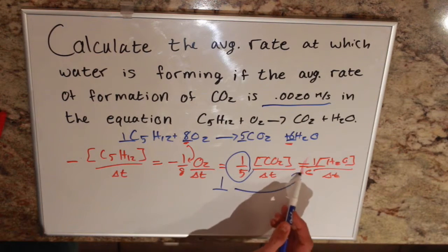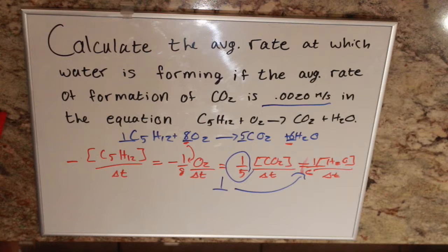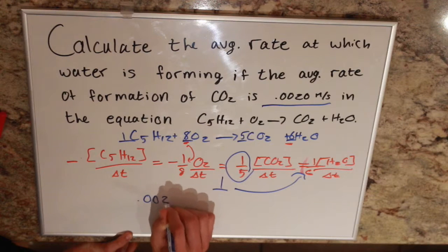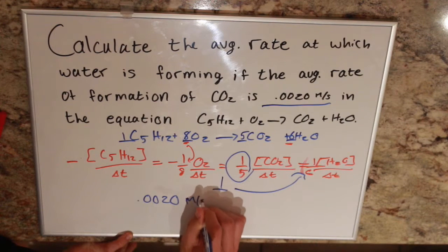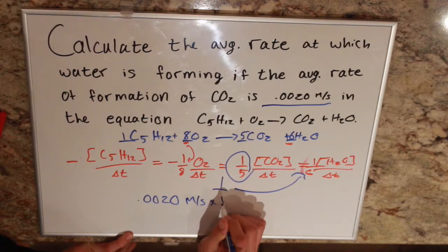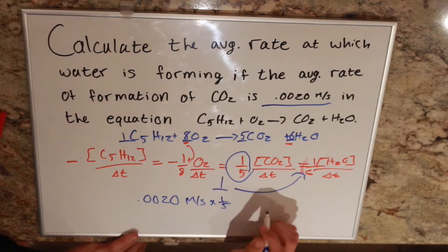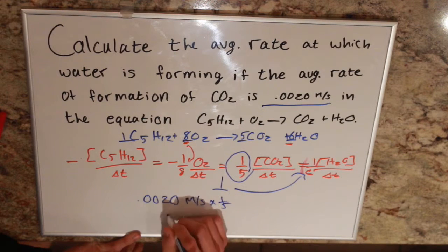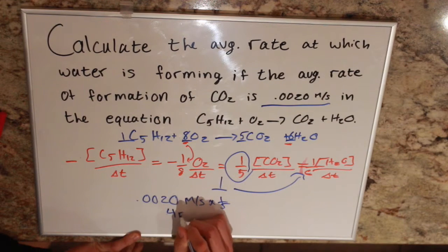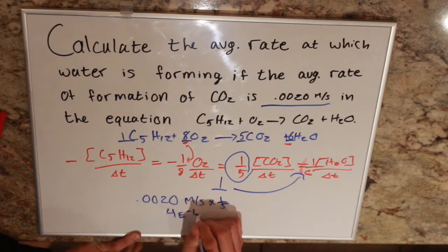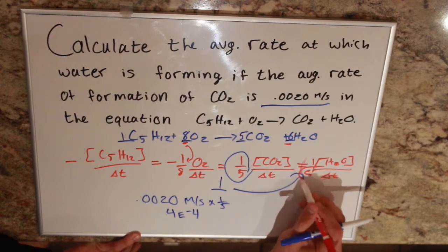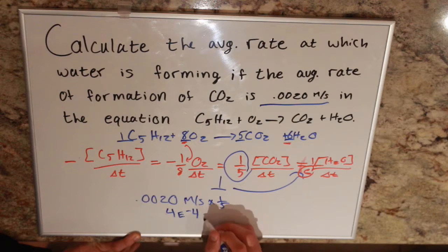all we have to do is multiply by the coefficient of water, which is 6. We take our 0.0020 moles per second and multiply by 1 fifth. That gives you a value of 4e-4. Then we multiply by 6.